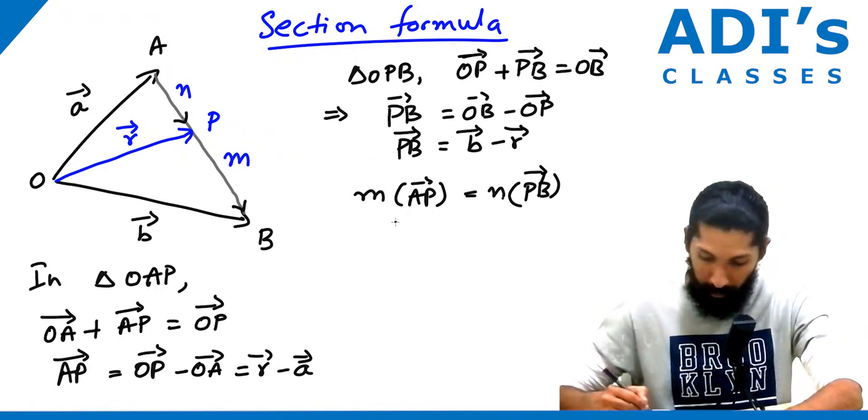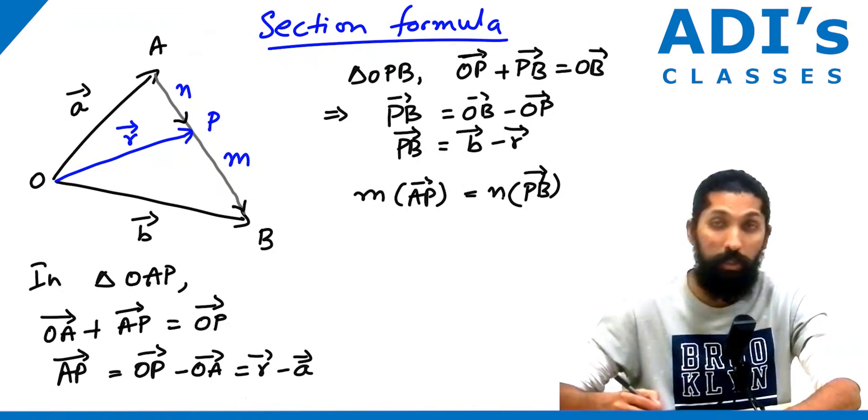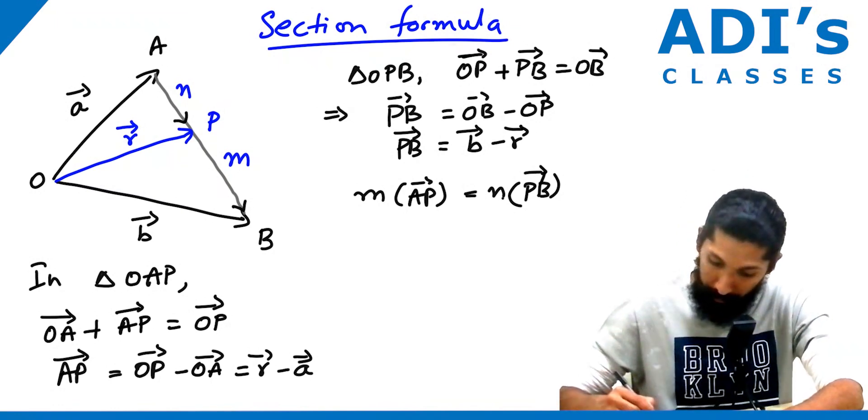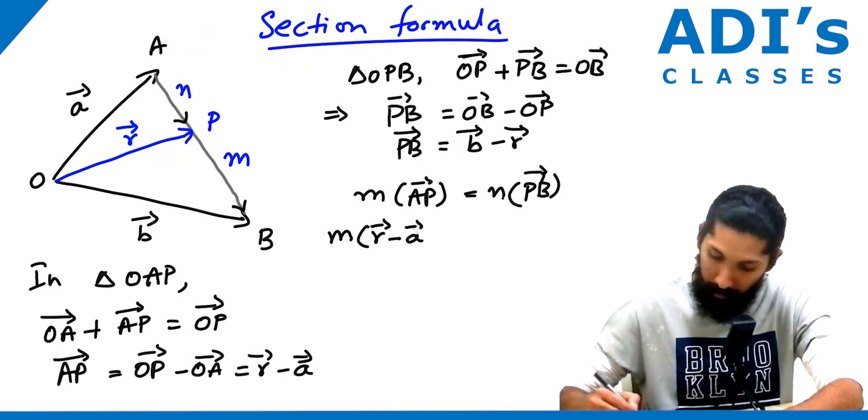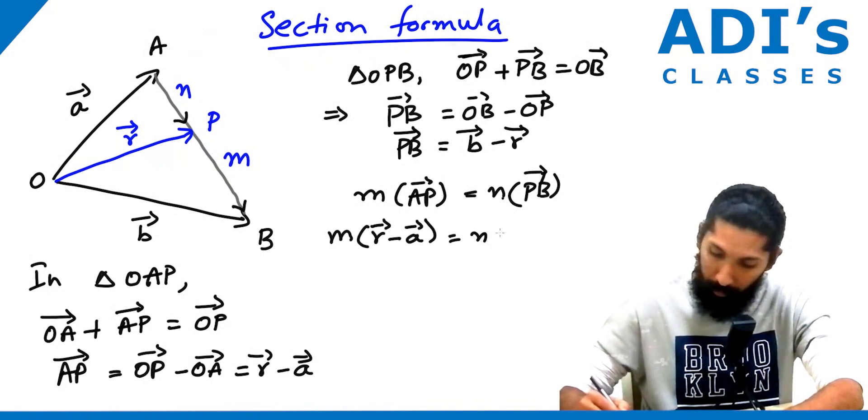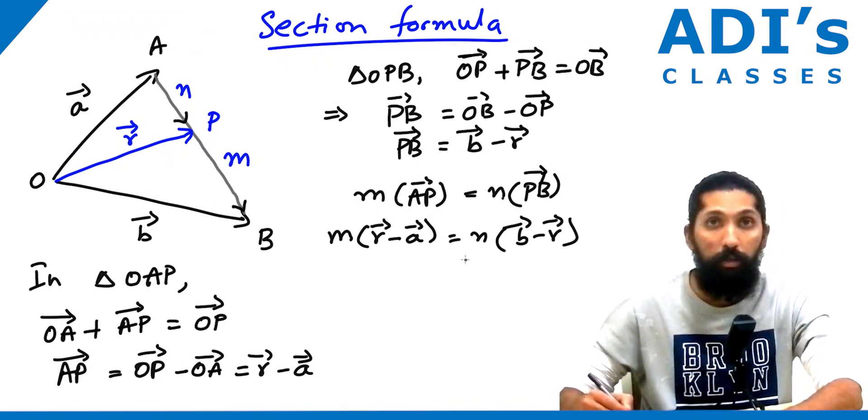What is AP? R minus A. So substituting, M times (R minus A) equals N times (B minus R).